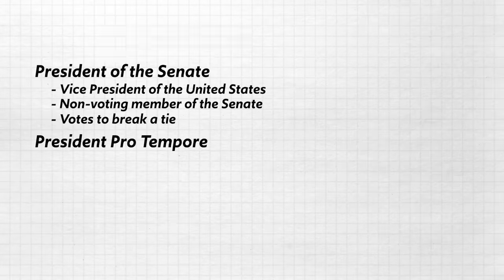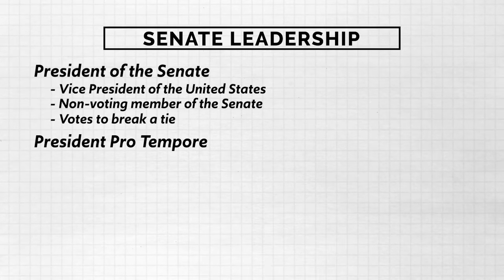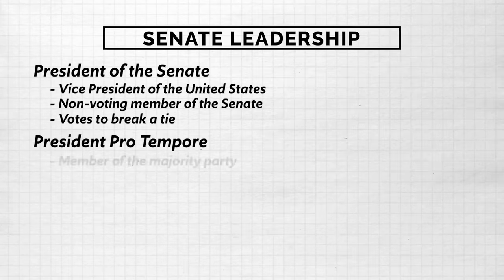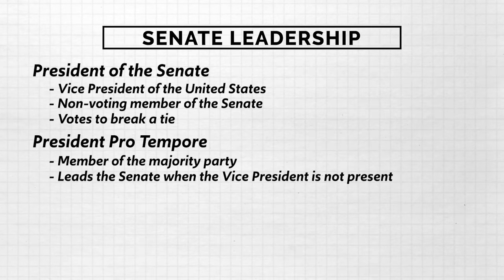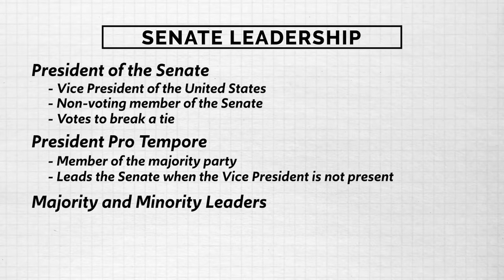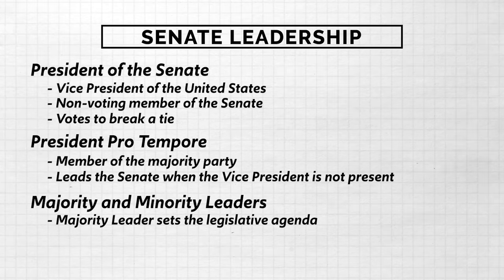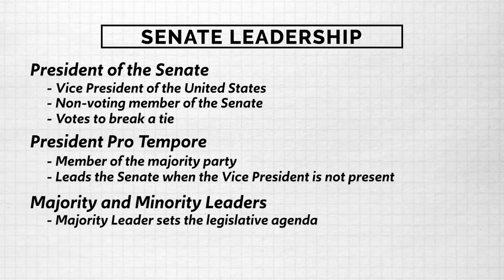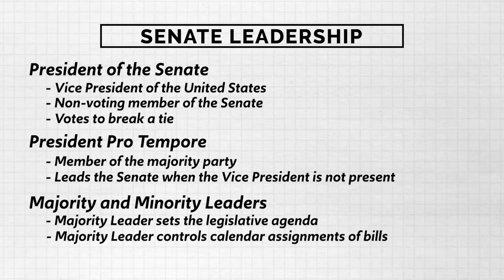That brings us to the next Senate leadership position mentioned in the Constitution: the President Pro Tempore, or President Pro Tem. The Senate members choose the President Pro Tem, which means this will be a member of the majority party, and this person leads the Senate when the Vice President is away. The next position is the majority and minority leaders. The majority leader has a great deal of power because he or she sets the legislative agenda by determining which bills reach the floor for debate.